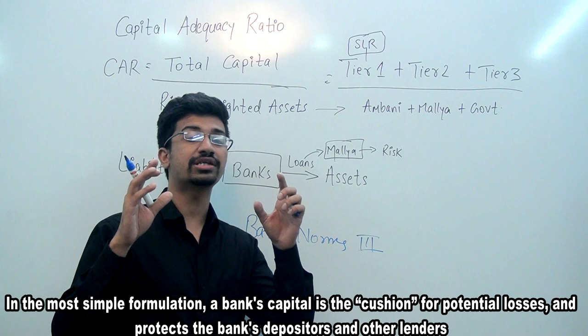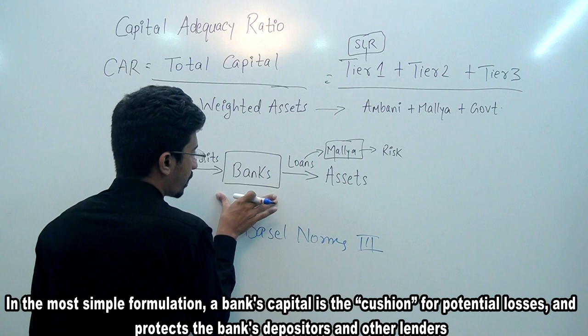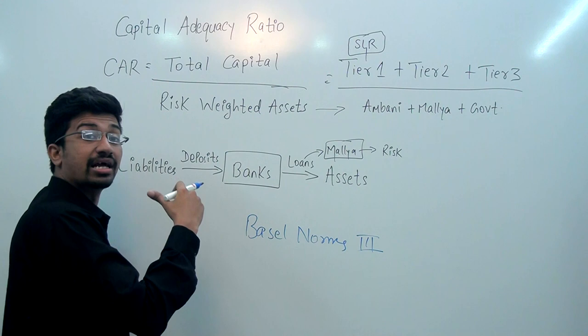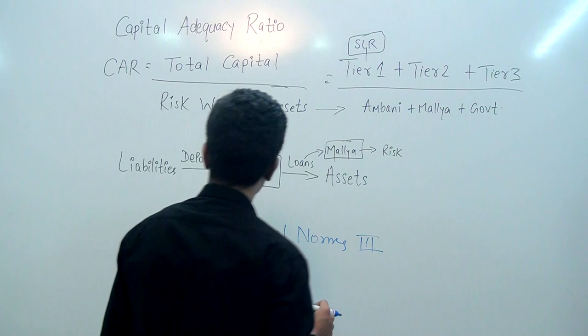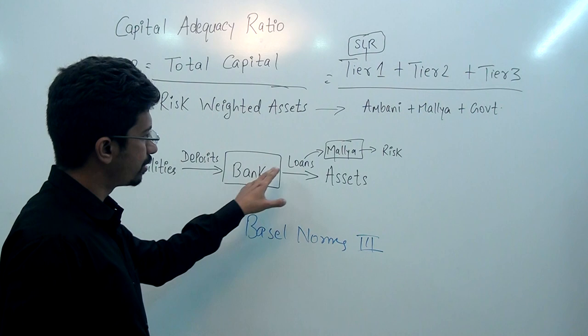That concept is about assets and liabilities of banks. We have already studied asset-liability in previous lectures, but just for revision — the loans that banks give out are the assets of banks. The deposits we put into banks are the liabilities of banks, because the bank has to return that money to us. So deposits are liabilities and loans are assets of the bank.